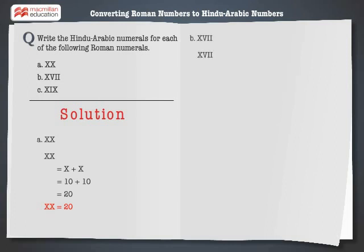Let's solve the next problem. XVII can also be written as X plus VII. The Hindu-Arabic numeral for X plus VII is 10 plus 7, or 17. Hence, XVII is equal to 17.